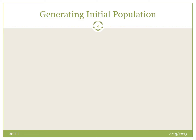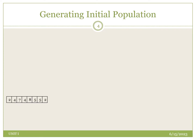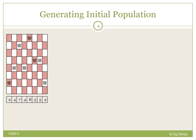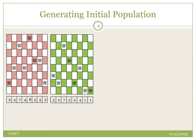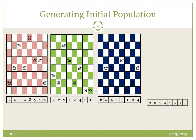The first step in genetic algorithm is selecting or generating the initial population. Let us assume four different initial populations, all selected randomly. In the first case, the queens are placed at positions: second, fourth, seventh, fourth, eighth, fifth, fifth, and second. Likewise, we have selected four different initial populations.